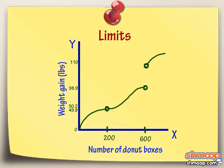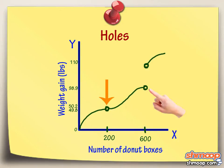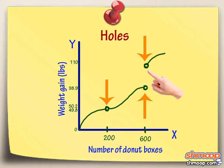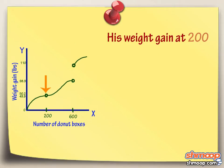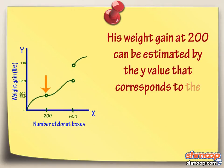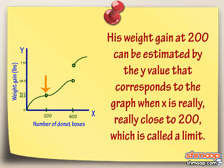Here's what Big Randy's graph currently looks like. Notice the missing points, called holes, at X equals 200 and the jump at X equals 600. Let's start by figuring out the hole at X equals 200. His weight gain at 200 can be estimated by the Y value that corresponds to the graph when X is really, really close to 200, which is called a limit.